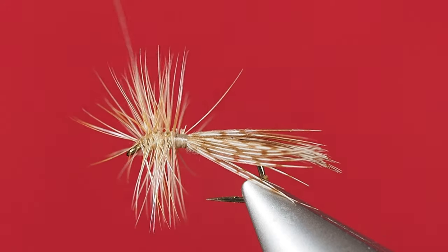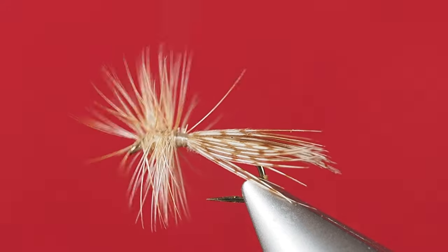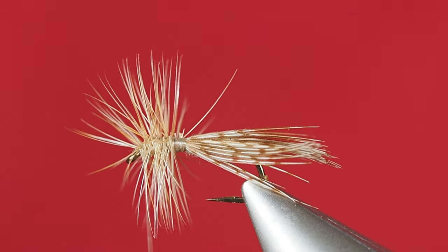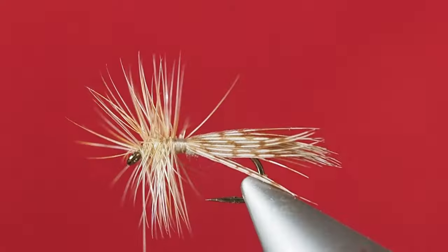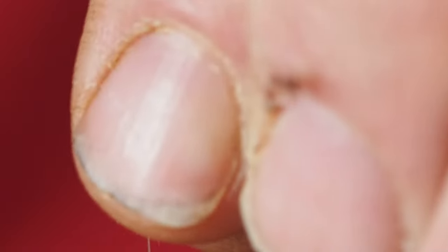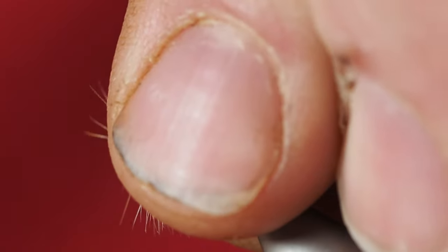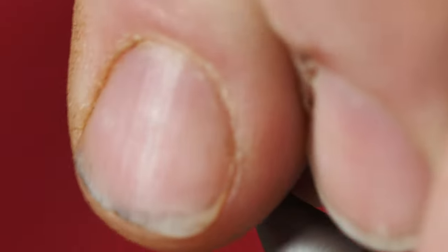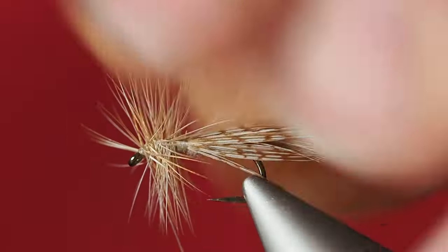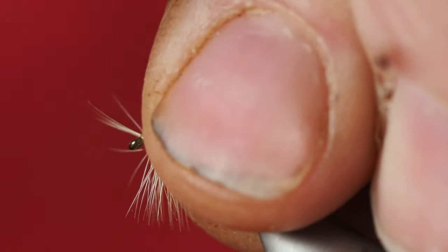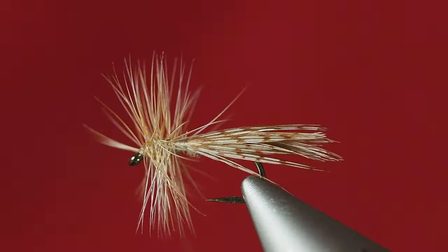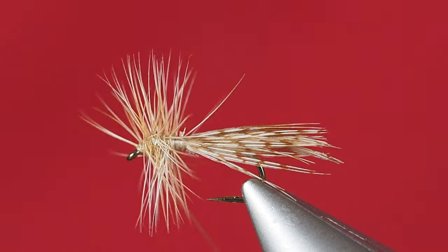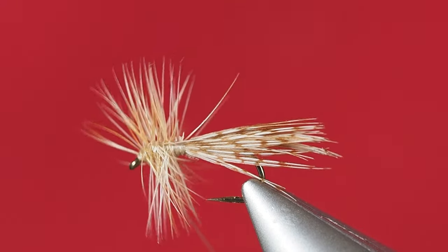What's really kind of cool about this technique is that we've now actually secured that hackle down pretty well. I'm just going to go ahead and stroke some of these fibers back. I'm going to have some stragglers that I'll end up cleaning up with my tweezers like I always do, but we're just going to tie a few wraps there around the eye of the hook to create ourselves our little head.